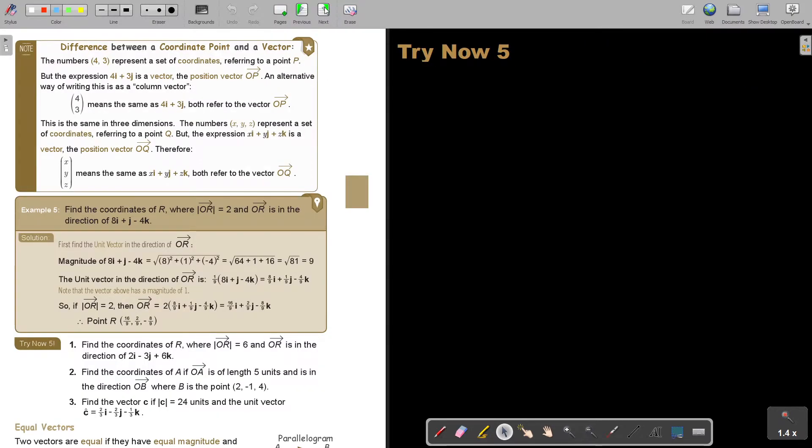Let's just go through this note. The difference between a coordinate point and a vector. The number 4, 3 represents a set of coordinates, referring to a point P. But the expression 4I plus 3J is a vector. The position vector OP, an alternative way of writing this as a column vector, means the same as 4I plus 3J.